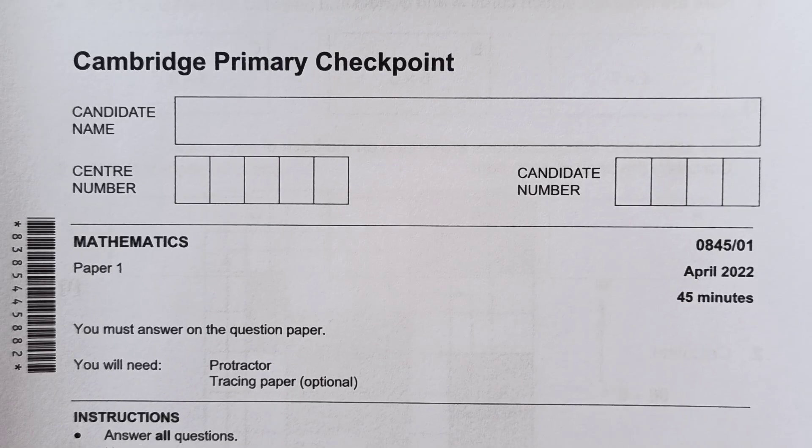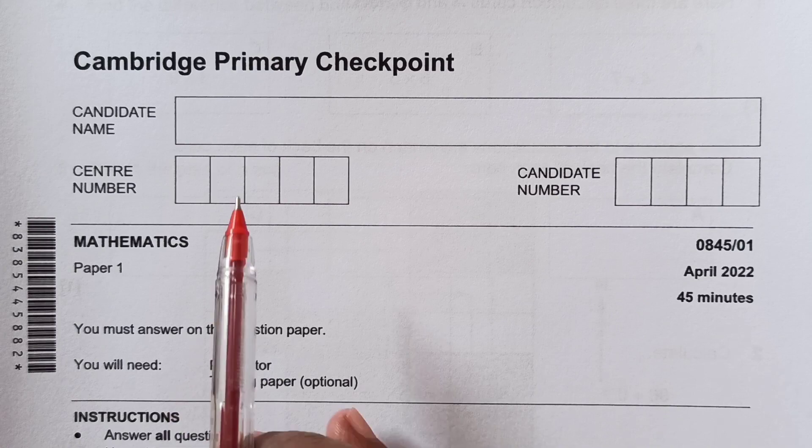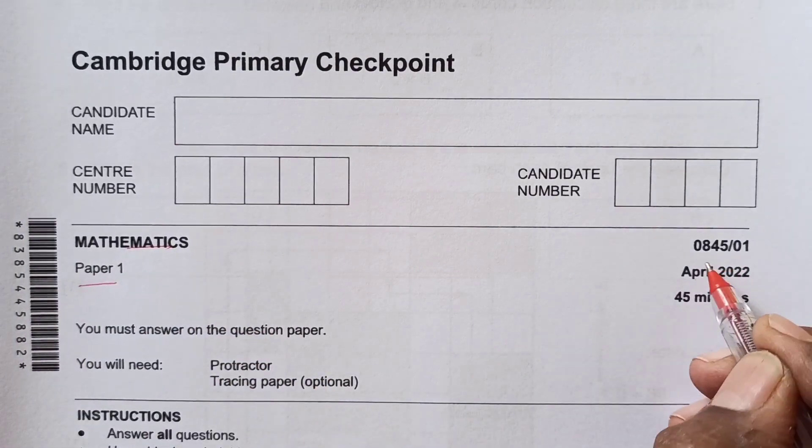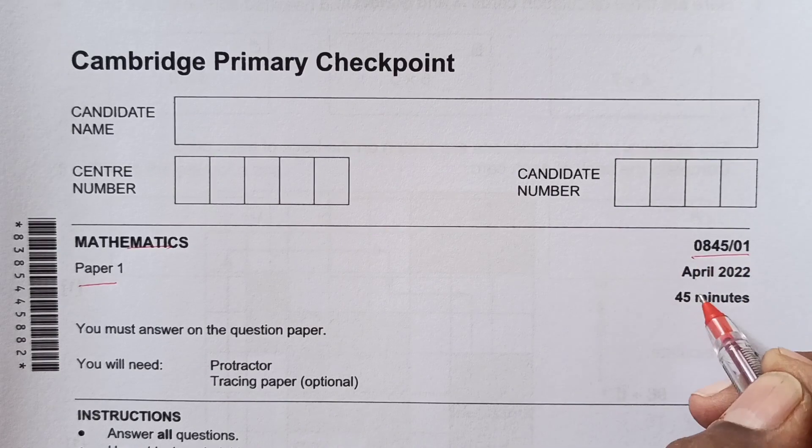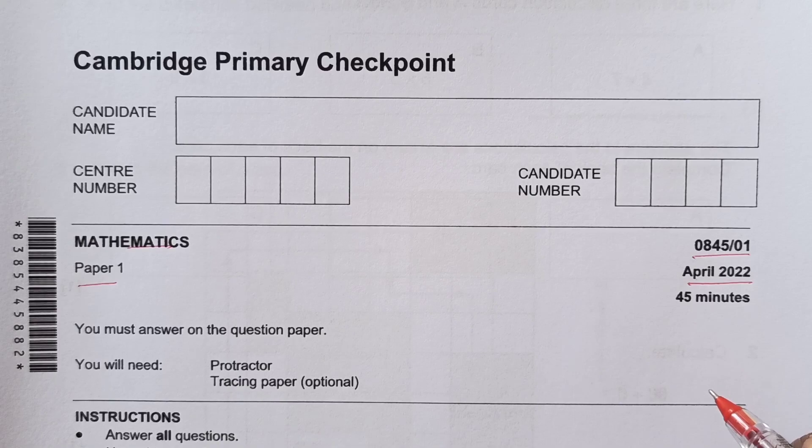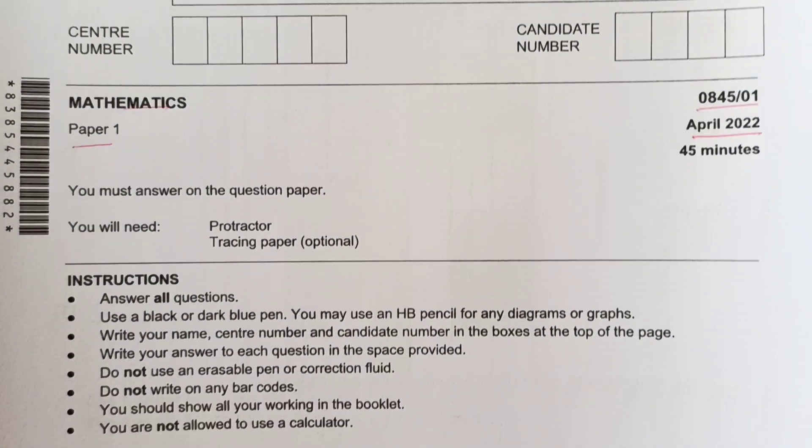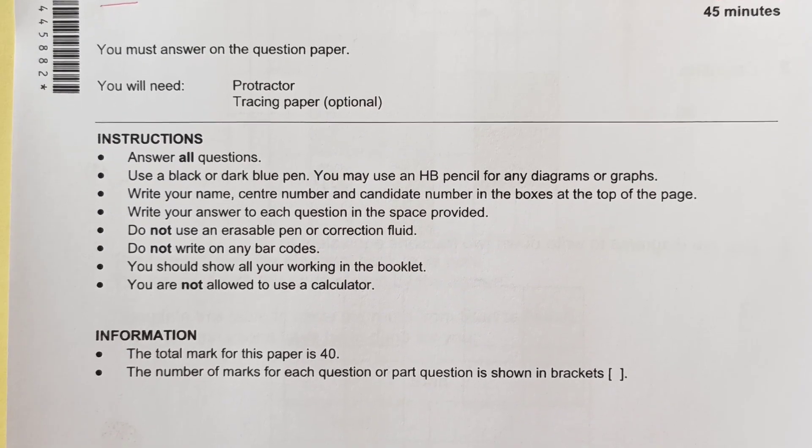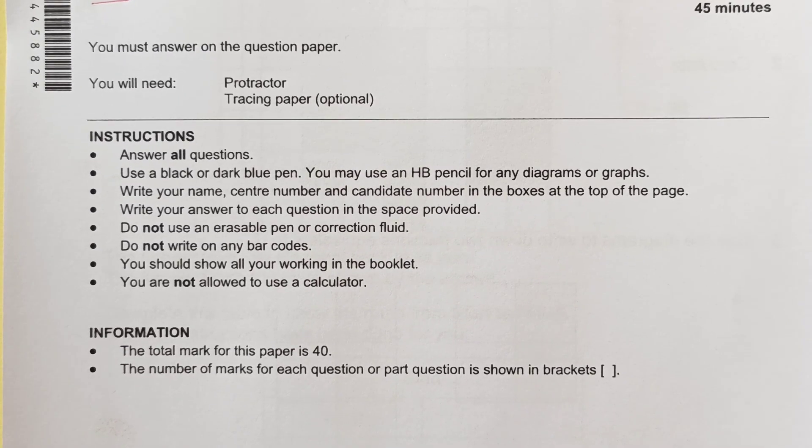Hello guys, welcome back to my channel. In this video, we will do Cambridge Primary Checkpoint Mathematics Paper 1. The code is 084501 and this is paper from April 2022 series. These are the instructions here. You can go through, you can have a screenshot, then you can read that.